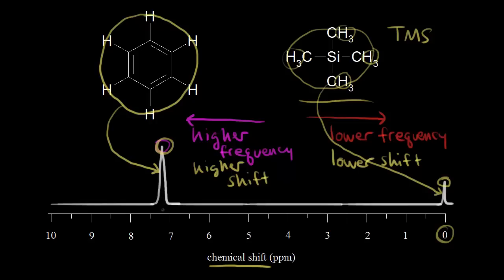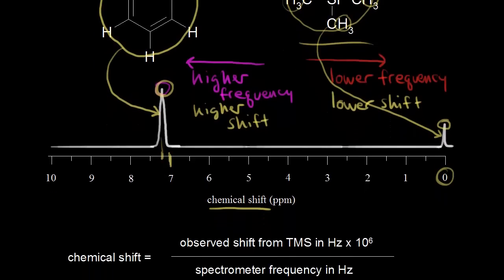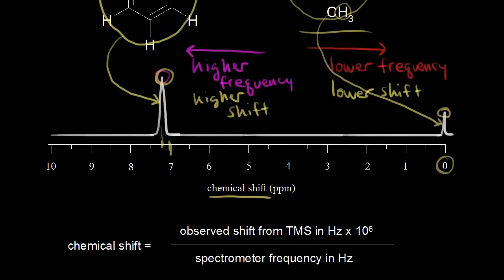So how do we figure out what the chemical shift is — for example, for the protons on benzene, where the signal appears a little past seven? Let's look at the formula for calculating chemical shift. Chemical shift is equal to the observed shift from TMS in Hertz, times 10 to the sixth, divided by the spectrometer frequency in Hertz.